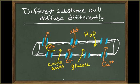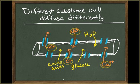Ions, such as potassium, sodium, calcium, and chloride, diffuse across the endothelial cells through channels in the plasma membranes.